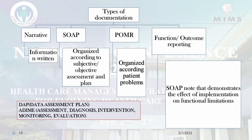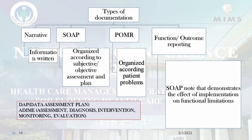There are different types of documentation. It can be either narrative, where information is written, then SOAP — organized according to subjective, objective, assessment, and plan. Then POMR, organized according to patient problems. Then function or outcome reporting, similar to SOAP notes, demonstrating the effect of implementation on functional limitations. Other forms are DAP (data, assessment, plan), and ADMI — that is assessment, diagnosis, intervention, monitoring, and evaluation. These types of documentation are used according to hospital policy.